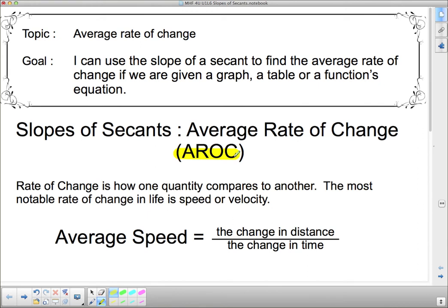Rate of change is how one quantity compares to another. The most notable rate of change in our life is speed or velocity. Average speed equals the change in distance over the change in time. If I said it took me 6 hours to go to Windsor and Windsor was 600 kilometers away, you would naturally assume that I was going about 100 kilometers an hour.